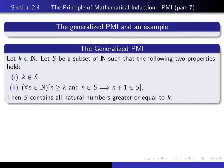In order to state it, we fix a particular natural number K, and we assume that S is a subset of the natural numbers having these two properties. One is that K lies in S, and two is that for every natural number N, if N is bigger than or equal to K and in S, then N plus 1 is also in S. Then the conclusion is that S contains all natural numbers greater than or equal to K.